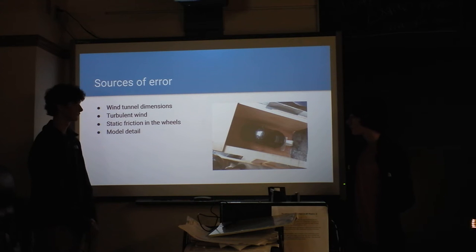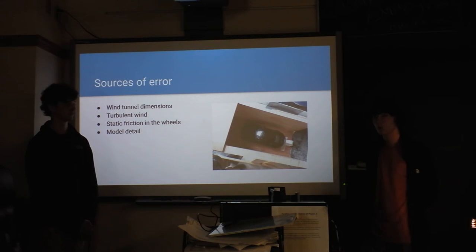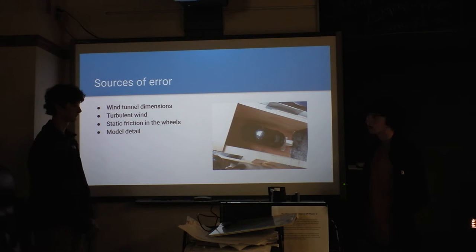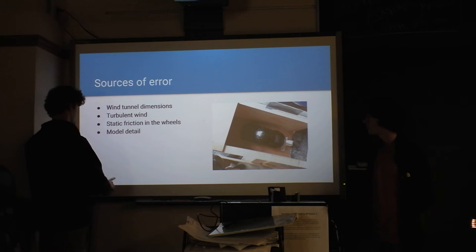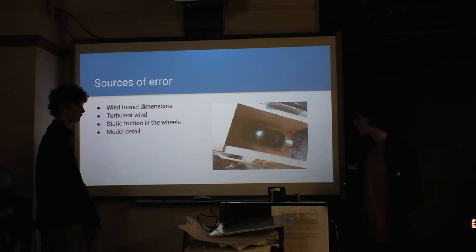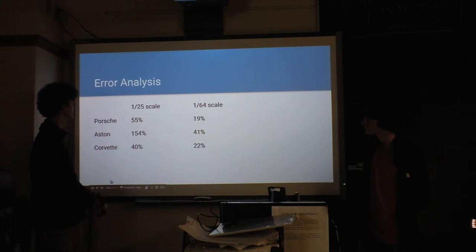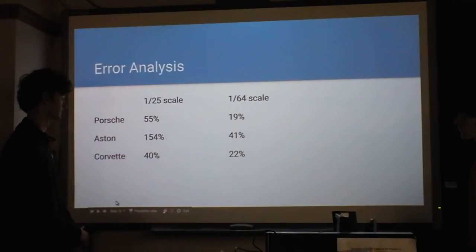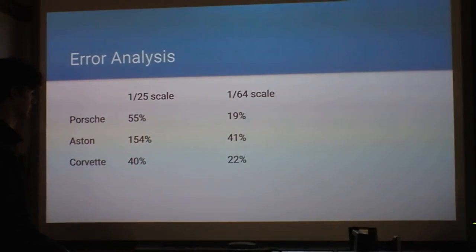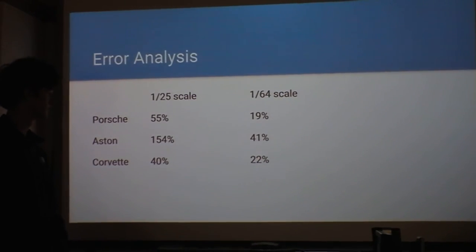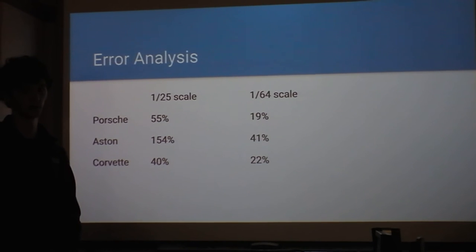We had a lot more error with the larger cars, which surprised us. We thought we'd just get more consistent, bigger numbers, but we actually got better numbers with the small cars. As you can see in the error table, the bigger cars were less consistent and had more error than the smaller ones.